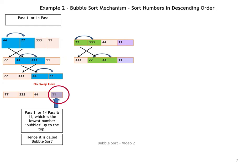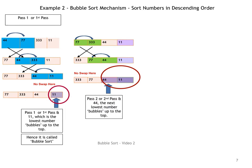Then we compare the next two numbers, 77 and 44, and ask: is 77 less than 44? No, it isn't. So we write the array out again with no swapping. We actually stop here, because we've got the second lowest number in place. In the second pass you get the second lowest number, 44, in place. After the second pass, 44 bubbles up to its position and we can see two numbers are now in order.